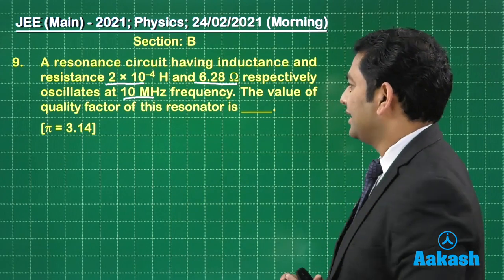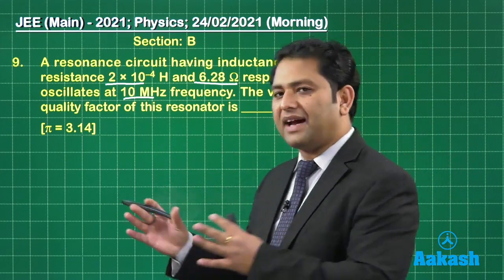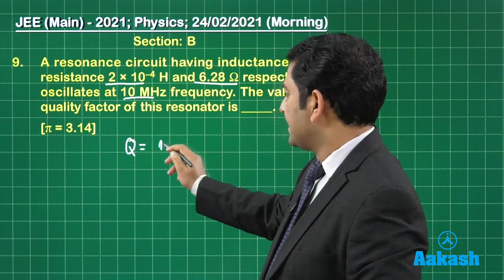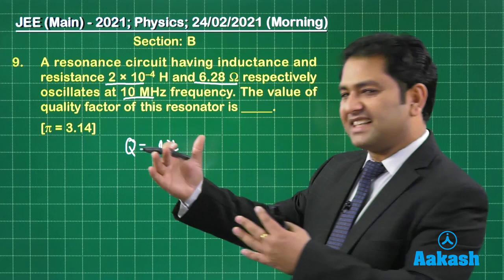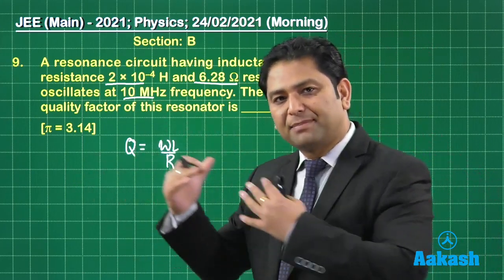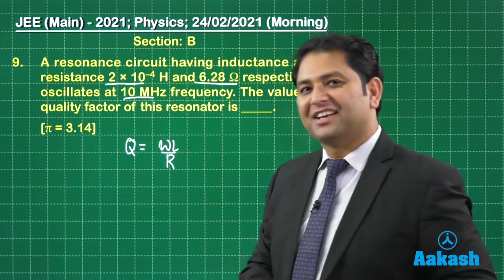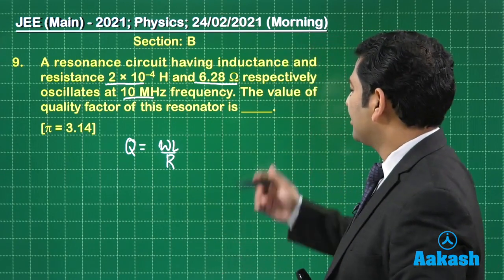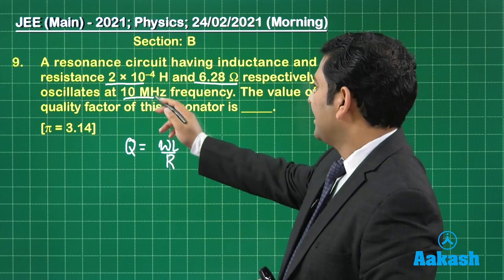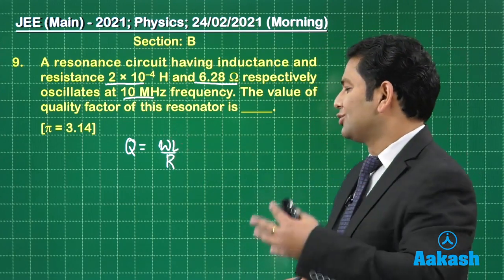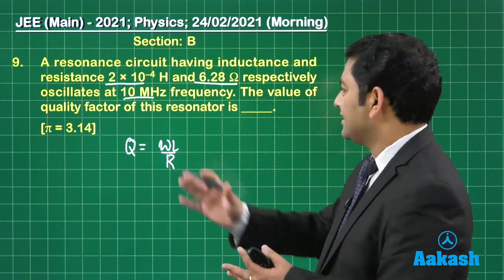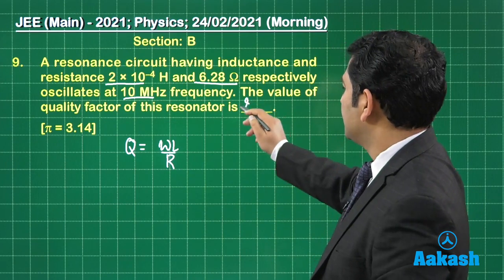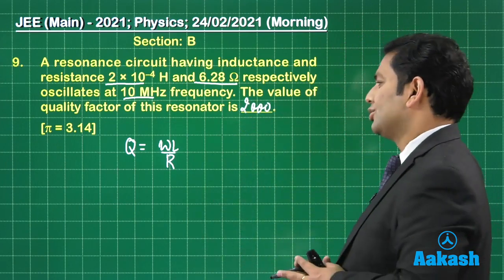And then we got to calculate the quality factor of this resonator. Now, quality factor is defined as omega L by R, XL by R or XC by R, but at resonance. Now that is very much important. So now, right here you can easily calculate the value of omega that's 2 pi F. The value of L is there. The value of resistance is there. When you go for this calculation, the quality factor comes out to be 2,000.